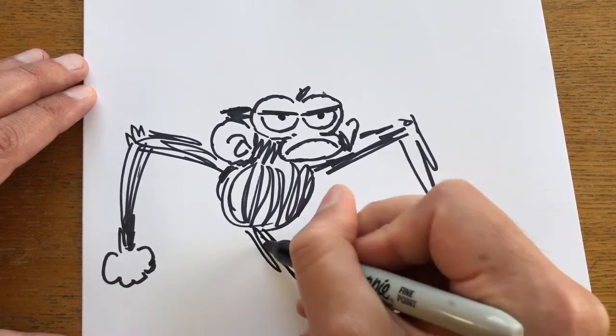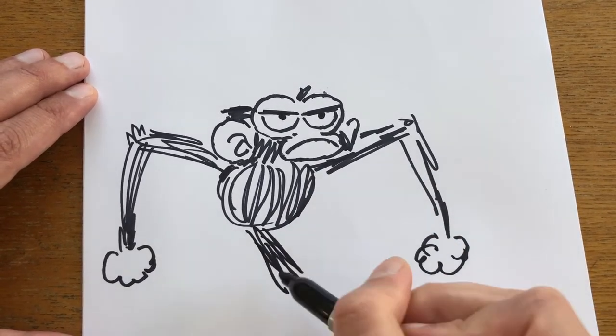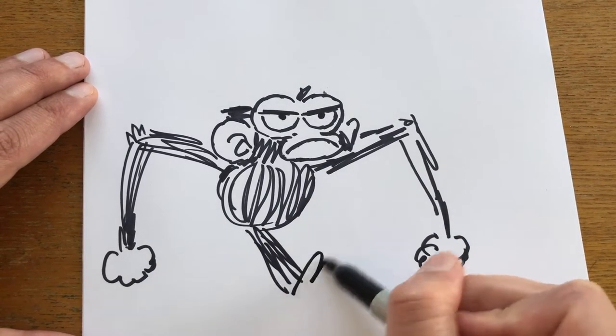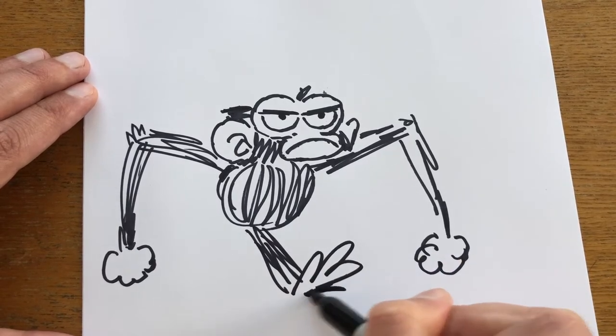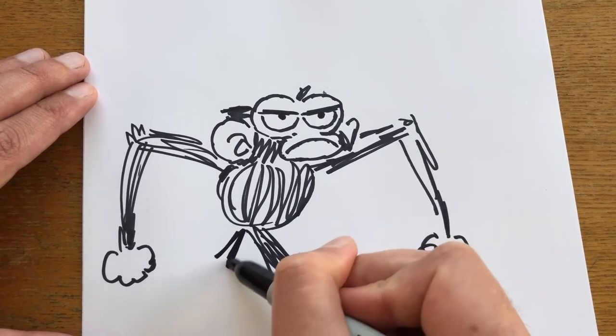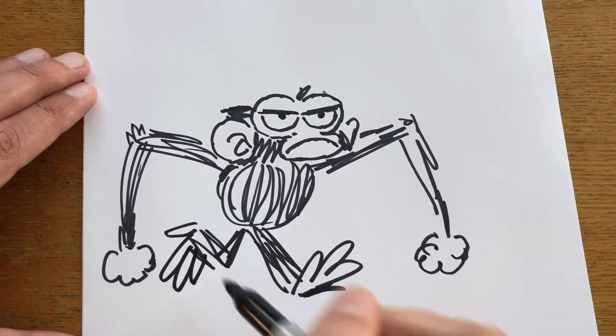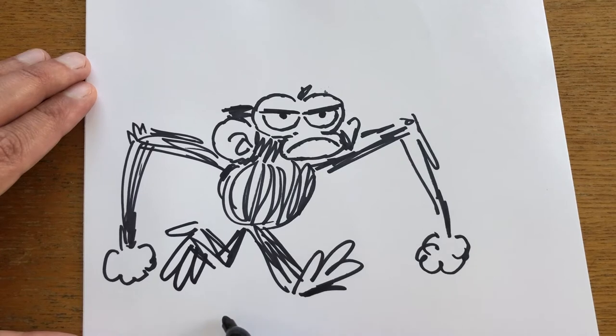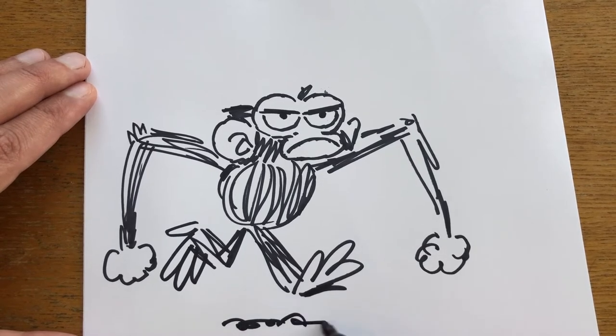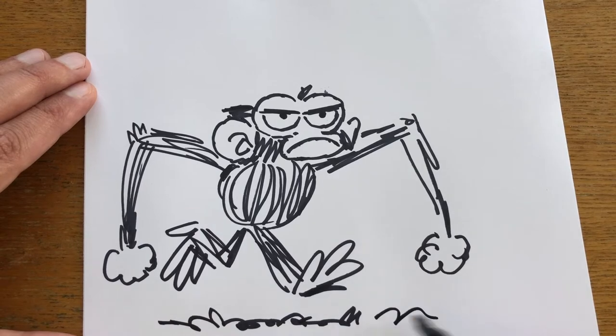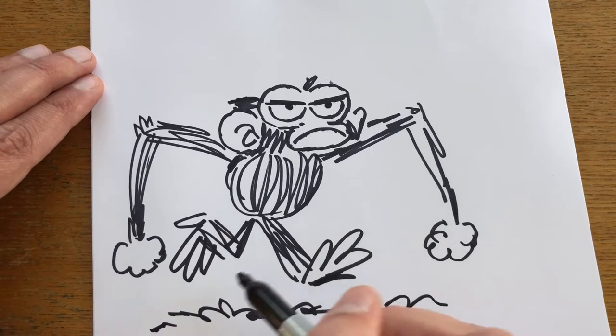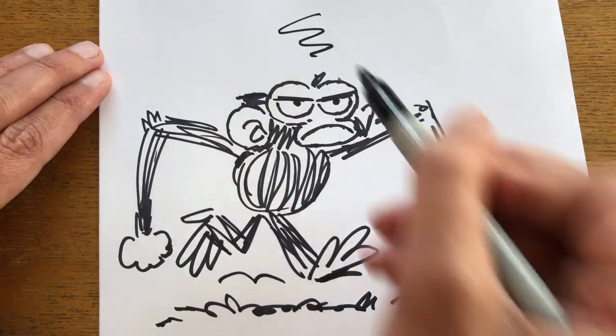Now in this drawing, I want to draw Jim storming off grumpily. So, his legs are in a walking position. One straight and one bent. A little bit of ground. And maybe a little grumpy squiggle over his head.